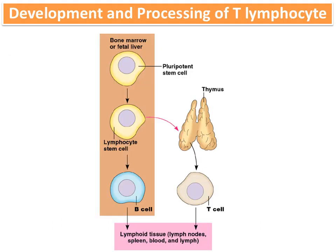Regarding the development and processing of T lymphocytes: T lymphocytes are originally derived in the embryo from pluripotent stem cells. These pluripotent stem cells are converted into lymphocyte stem cells, also known as lymphoid progenitor cells.